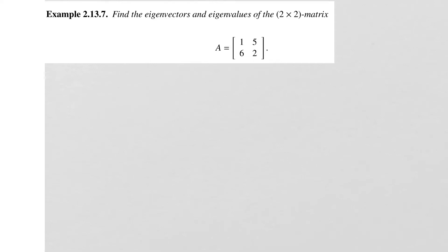In this lesson we're going to look at eigenvalues and eigenvectors. I'm going to walk you through example 2.13.7, which asks us to find the eigenvectors and eigenvalues of a 2 by 2 matrix.